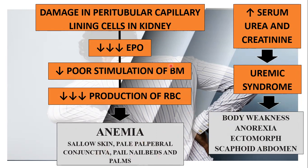As for the decrease in glomerular filtration rate, that would increase the serum urea and creatinine, and could lead to uremic syndrome. This would be manifested by the patient as body weakness, anorexia, ectomorph body type, and scaphoid abdomen.